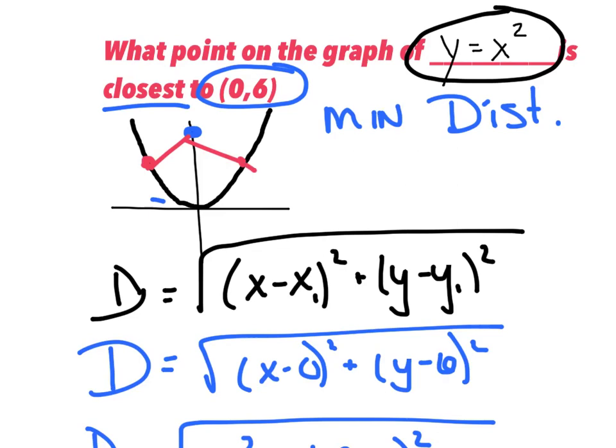Since y equals x squared, plugging those x-values in and squaring gives y equals eleven halves for both points. Those are the two points that minimize the distance and are closest to 0, 6. There should be two because we do have that symmetric graph. That does it for us, wrapping up our optimization on minimizing distance. Pause and rewind what you need to, and we'll look forward to seeing you in class. Have a great night.